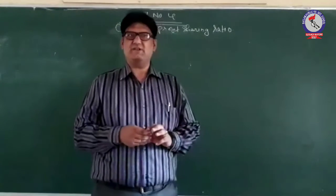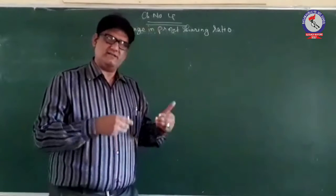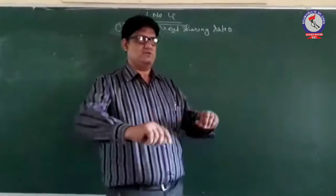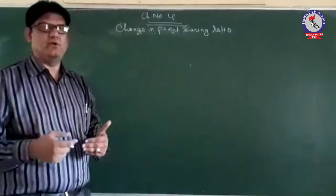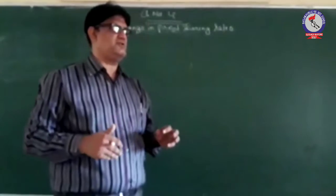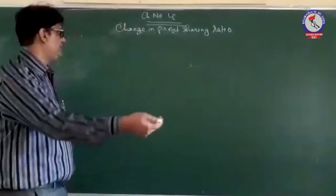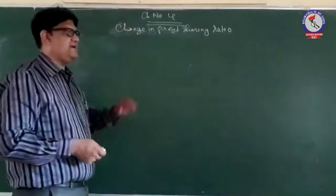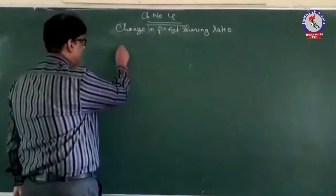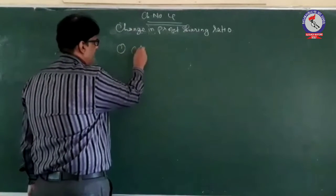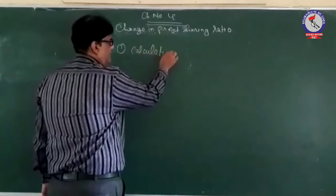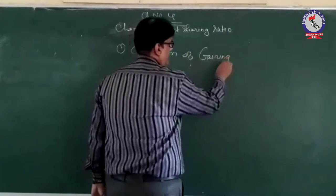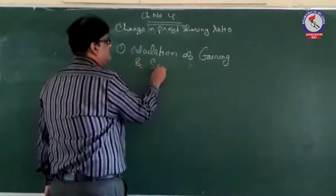So they will change their profit sharing ratio. The old ratio is not to be followed by the partners anymore, and now they want the new profit sharing ratio. So there will be two ratios — old and new — and with the help of these two ratios we can find out the gaining and the sacrificing ratio. The first adjustment at this point of time is related with the calculation of gaining and sacrificing ratio.